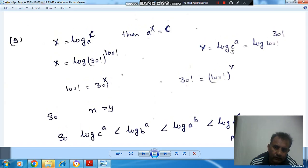And similarly, if we take log C base A, then 30 factorial will be equal to 100 factorial to the power y.